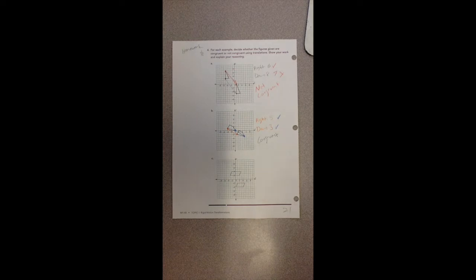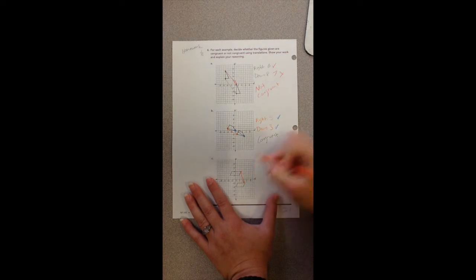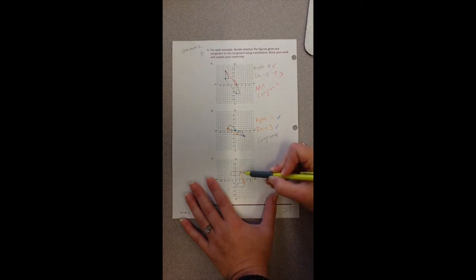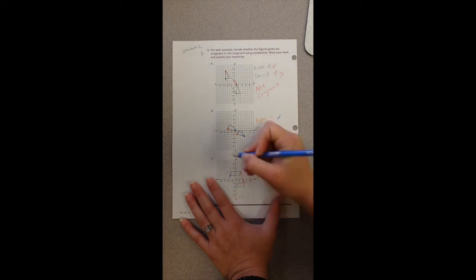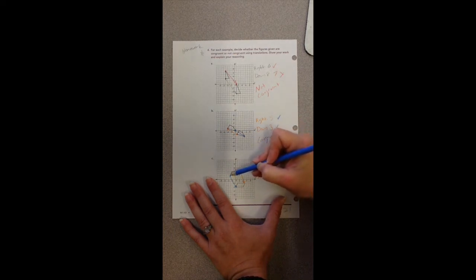Okay, and then the last one, number C. Same thing, check a couple points from here to there. And you'll notice that I'm just always going from the top one down to the bottom. You could do the same thing going from bottom to top. It's just how my brain works. So let's see how this one moved. So it went to the right one, two. And then it went down one, two, three, four, five, six. So now let's see if that's true for other points. So this one, let's see, went to the right one, two, three. Oh, so that's not true. So this is not congruent.